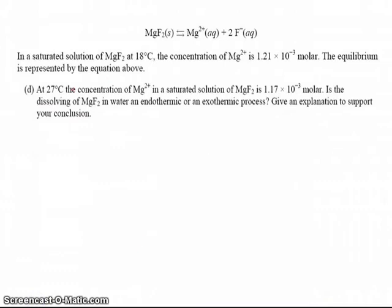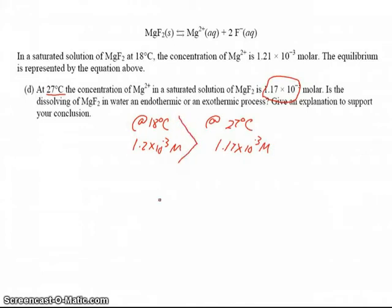Alright, the last question says that at 27 degrees, the concentration of magnesium 2+ in a saturated solution has changed up to 1.17 times 10 to the minus 3. And so then they want to know, is it endothermic or exothermic? And they want an explanation to support it. So let's look at this. Because at 18 degrees C, we have 1.2 times 10 to the minus 3 molar. And then at 27 degrees C, we're down to 1.17 times 10 to the minus 3 molar. And so as we add heat, we're reducing the amount of stuff that will dissolve, the amount of salt that will dissolve. So adding heat is lowering my solubility.